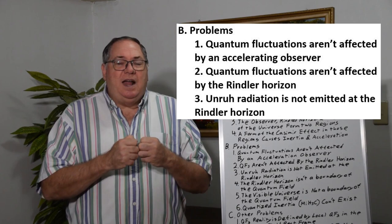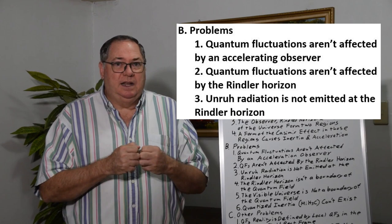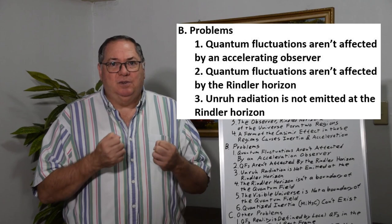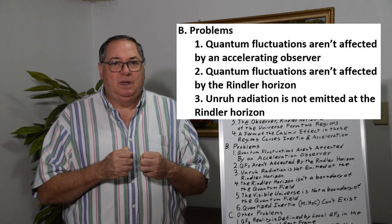So they're not affected by the rocket's Rindler horizon. Quantum fluctuations are not converted into photons. Basically, there's no Unruh radiation. It's a false assumption.